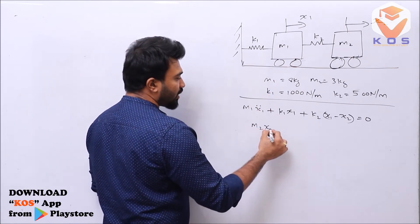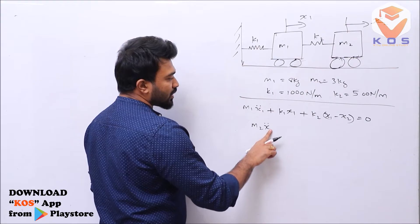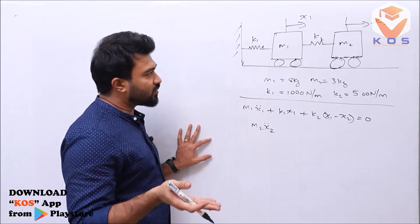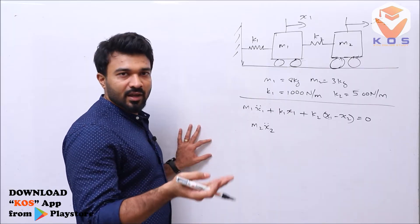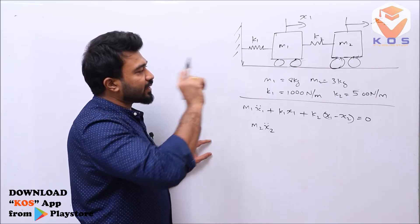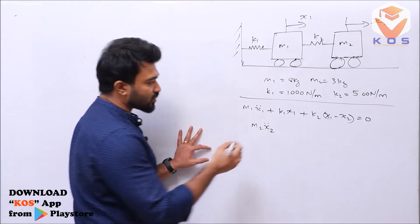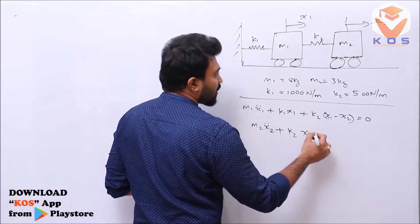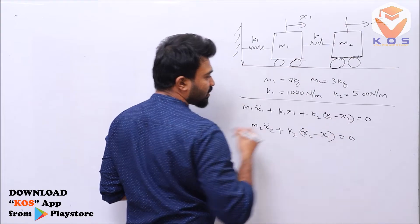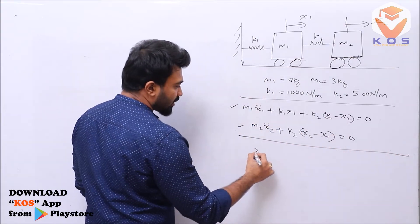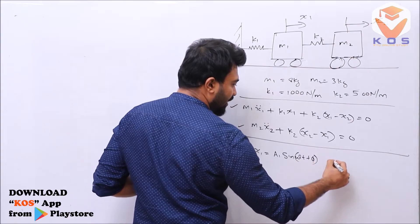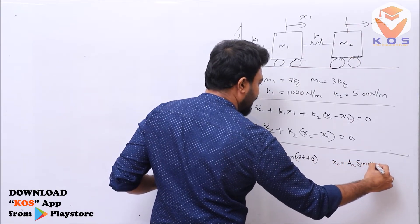Now m2 mass is related to only one spring, which is k2. So the equation is: m2 x2 double dot plus k2 (x2 minus x1) = 0. We assume x1 = a1 sin(ωt + φ) and x2 = a2 sin(ωt + φ).